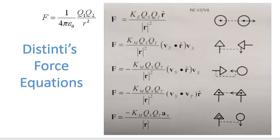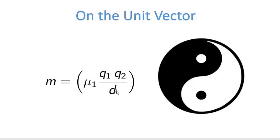You'll see my language diverging from what Robert Distinti is doing because he uses R and I use D. I use D because what we're really talking about is the distance between charges. When we're talking about Coulomb's Law, we're talking about the distance between charges. There are actually two things that I believe nature cares about: distance between charges, and boundary conditions.